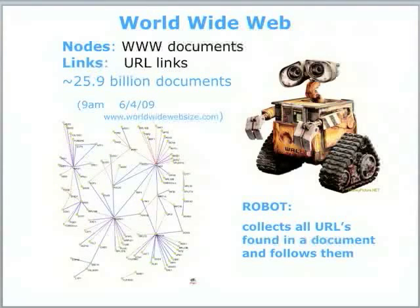So in this case, the nodes are World Wide Web documents and the links between them are the URL links. Well, I checked this morning, in fact, the size of the internet has not changed since that date. It's about 26 billion documents in it.